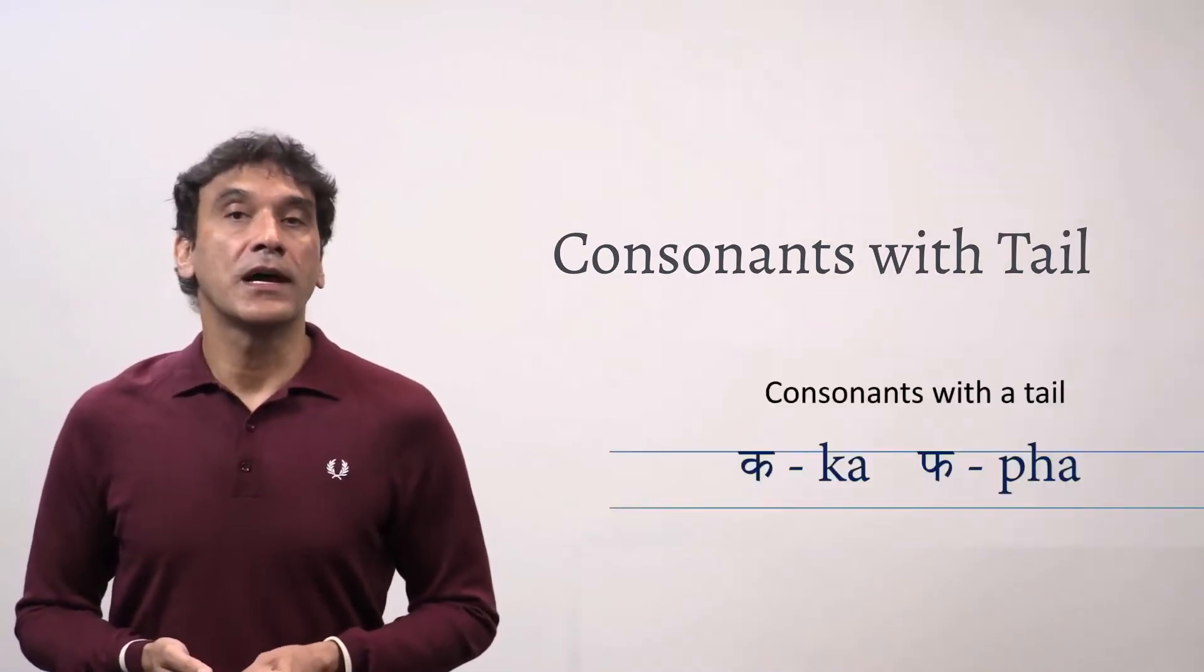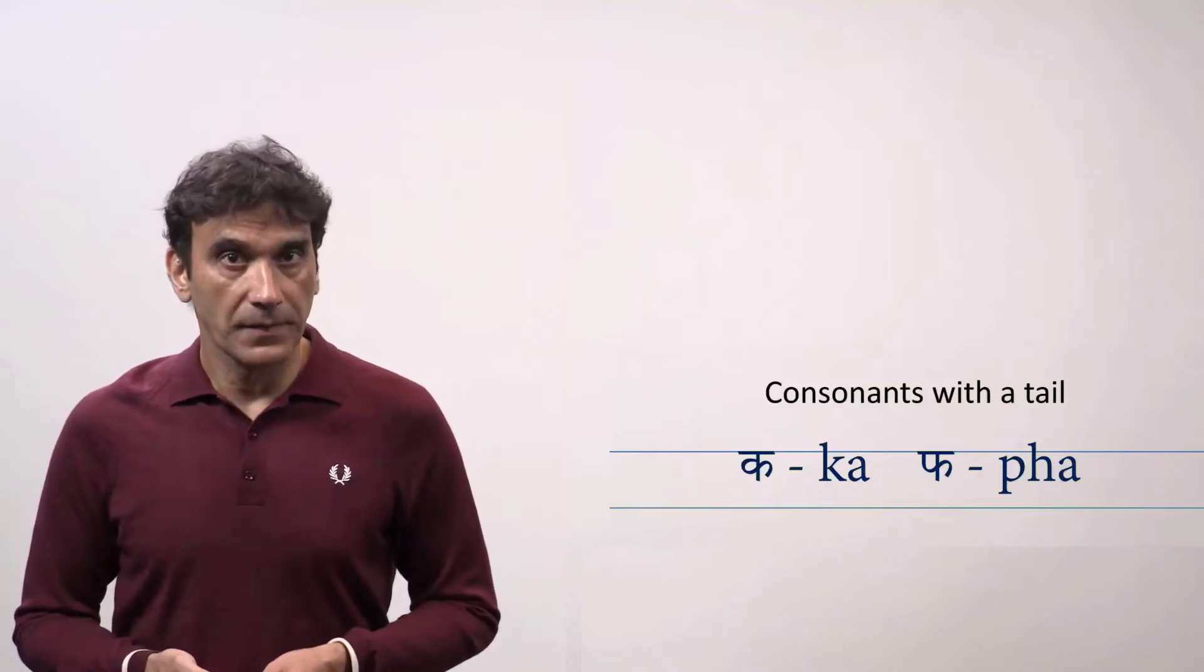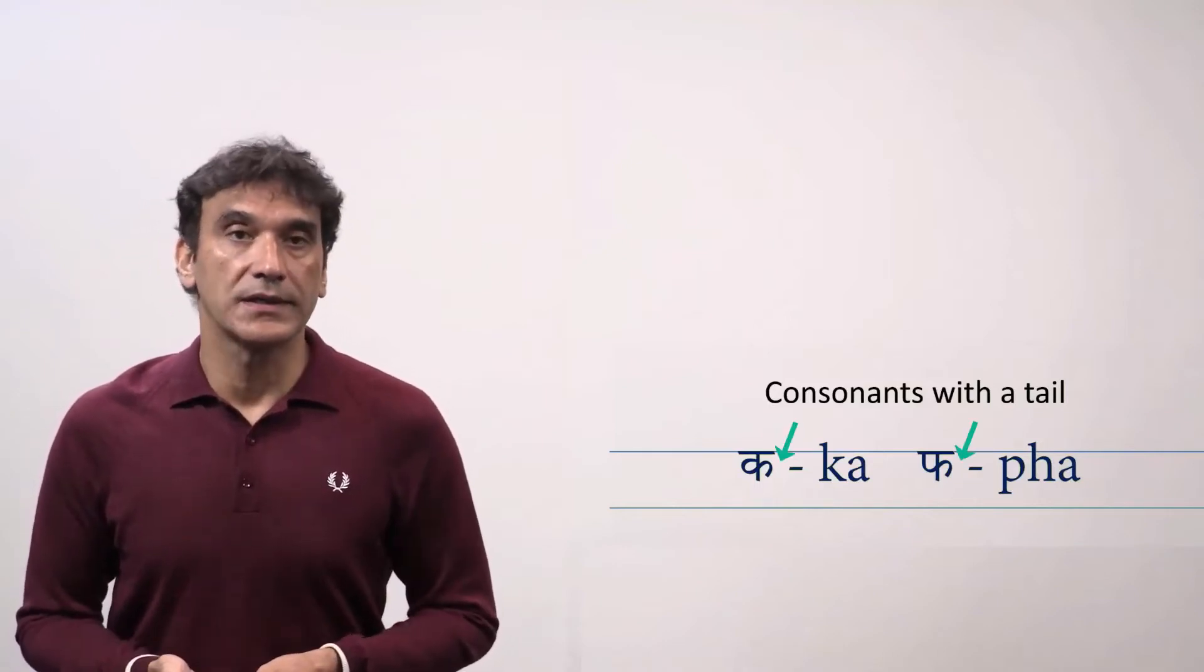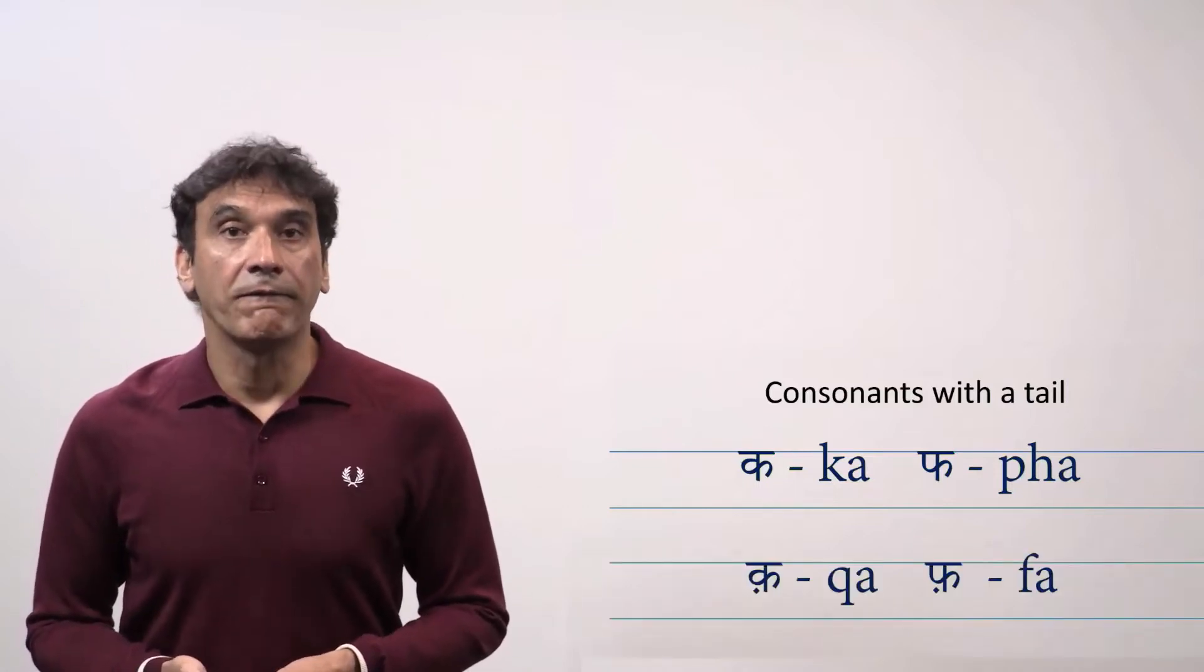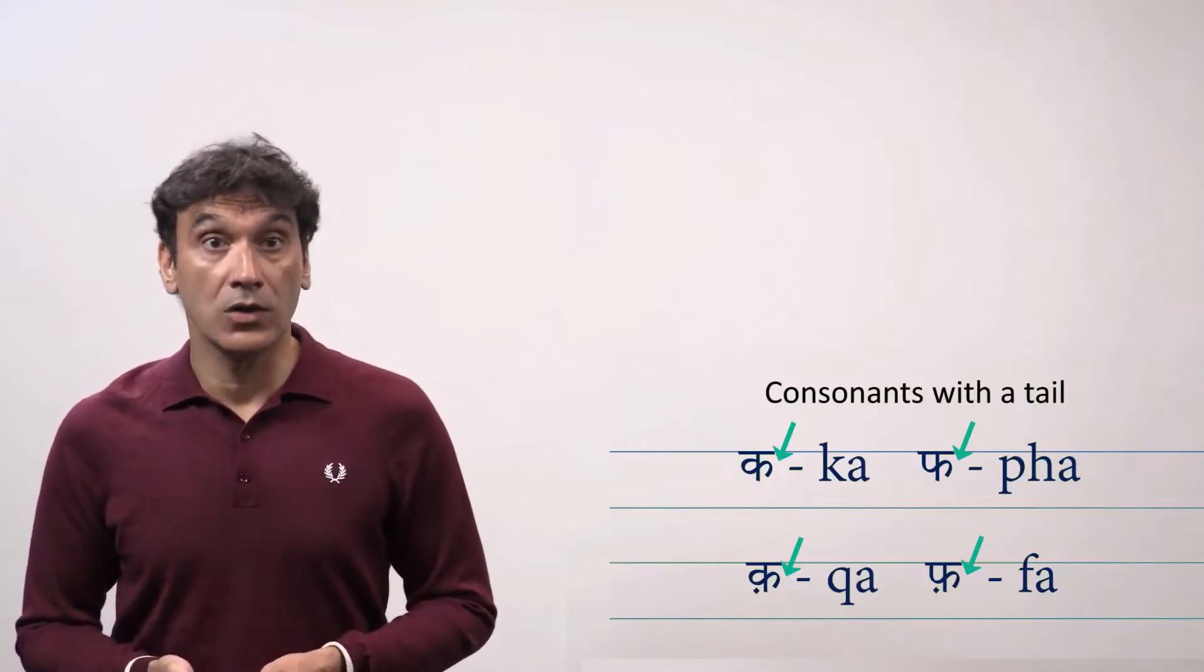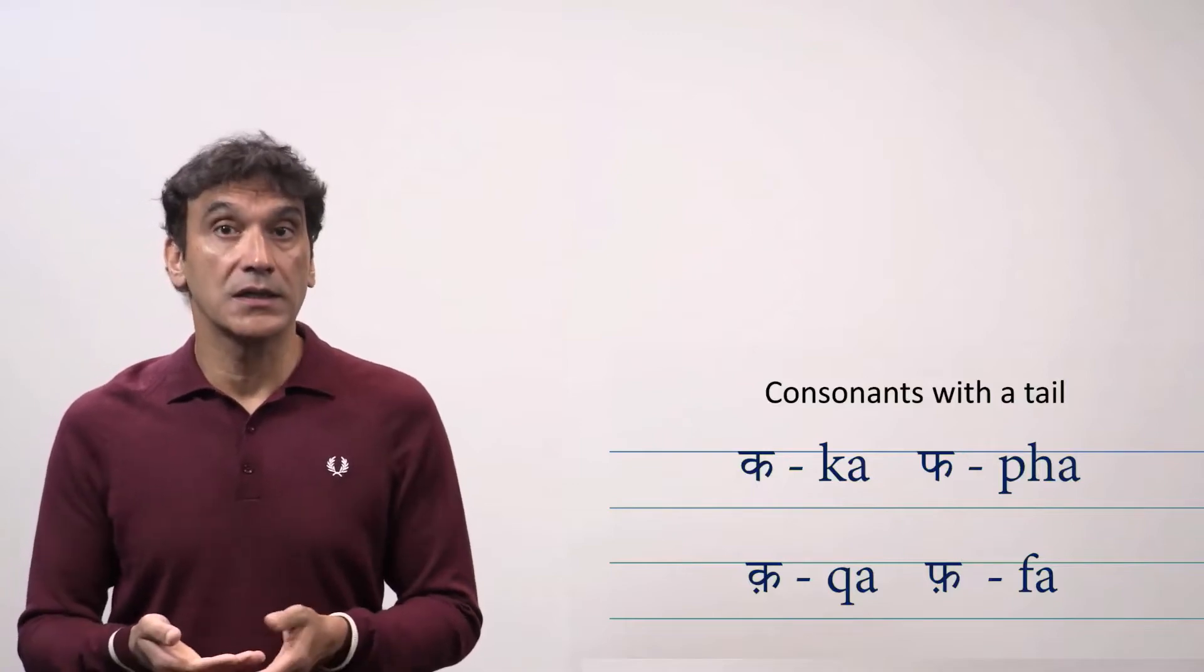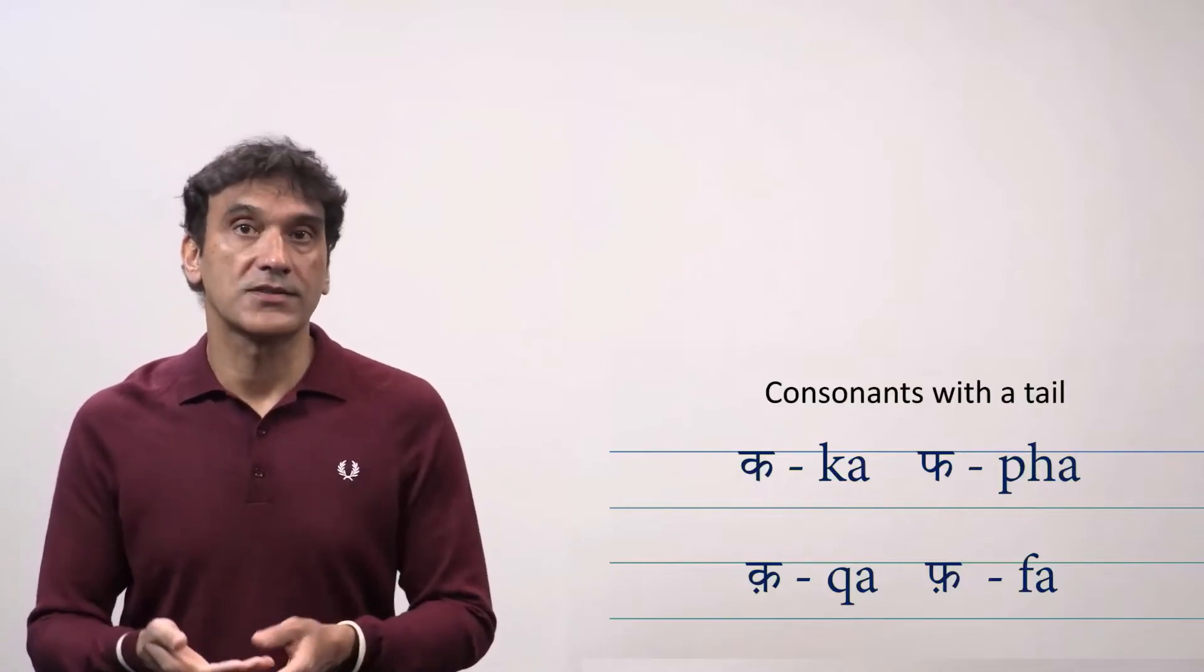In today's video we will learn how to make a consonant cluster with the consonants that have a tail. In Devanagari script there are two consonants that have a tail. The first Arabic sounds that are made by adding also have a tail. So today we will learn how to make half consonants. Let's start.